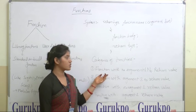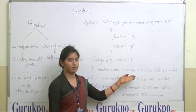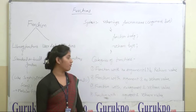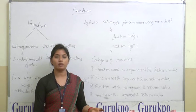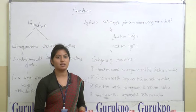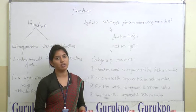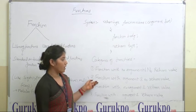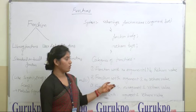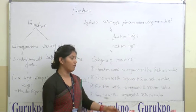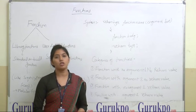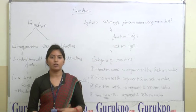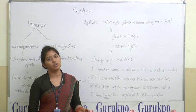The first category is function with no argument and no return value — the argument list is void and the return type is also void. The second category is function with argument and no return value, in which the return type is void but we have an argument list, perform calculations, and use them.